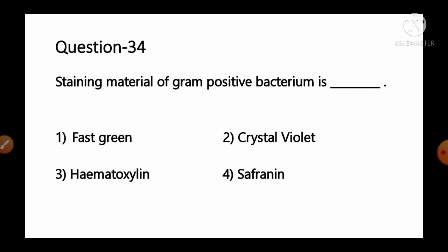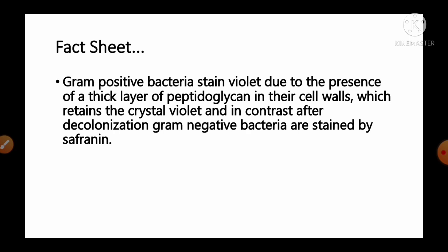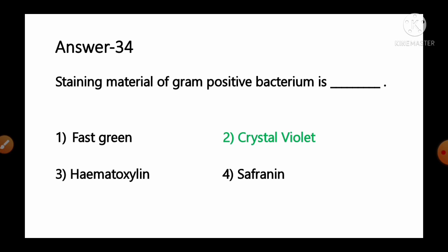Question number 34: Staining material of gram-positive bacterium is — options: 1) fast green, 2) crystal violet, 3) hematoxylin, 4) safranine. Gram-positive bacteria stain violet due to the presence of a thick layer of peptidoglycan in their cell walls, which retains the crystal violet. In contrast, after decolorization, gram-negative bacteria are stained by safranine. So option number 2, crystal violet, is the correct answer.